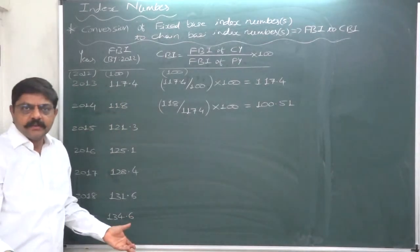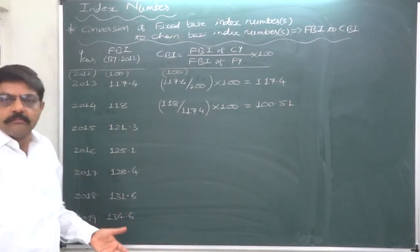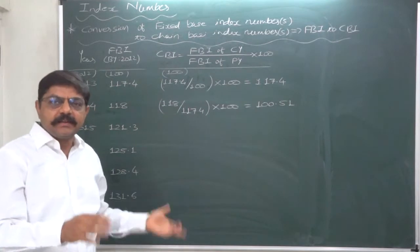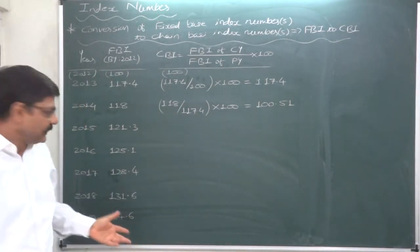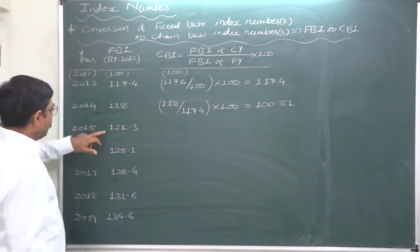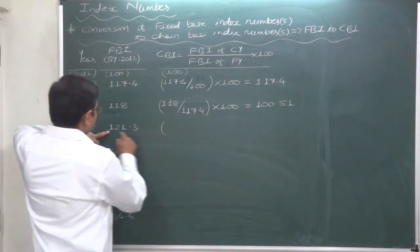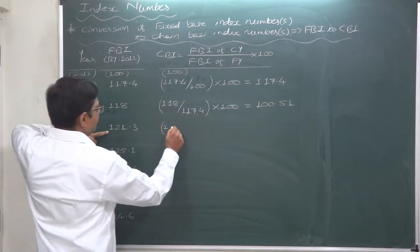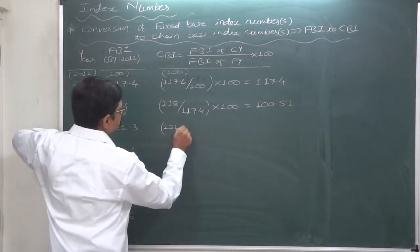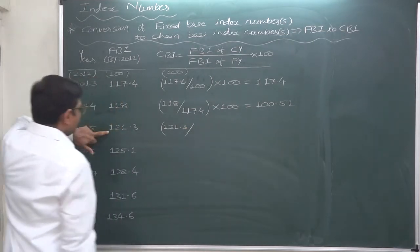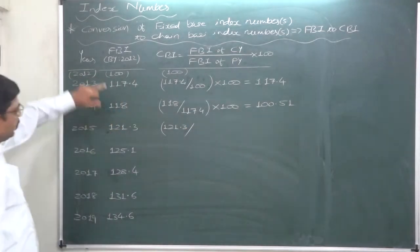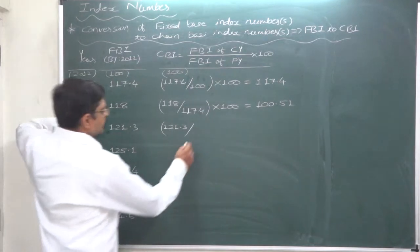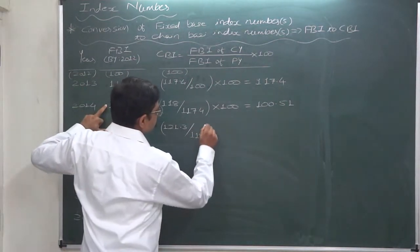For 2015: the fixed-base index number for the current year is 121.3, divided by the fixed-base index number of the previous year 2014, which is 118. Multiply by 100 to get the chain-based index number.